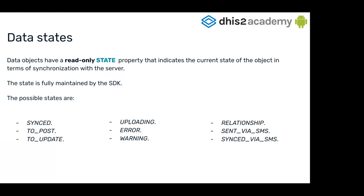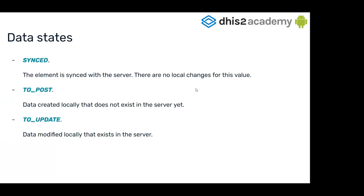For example, we have the sync, to post, update, uploading, and so on. We're going to see all of them. First of all, we have the sync state. That's when the element is synced with the server and there are no local changes for this value.